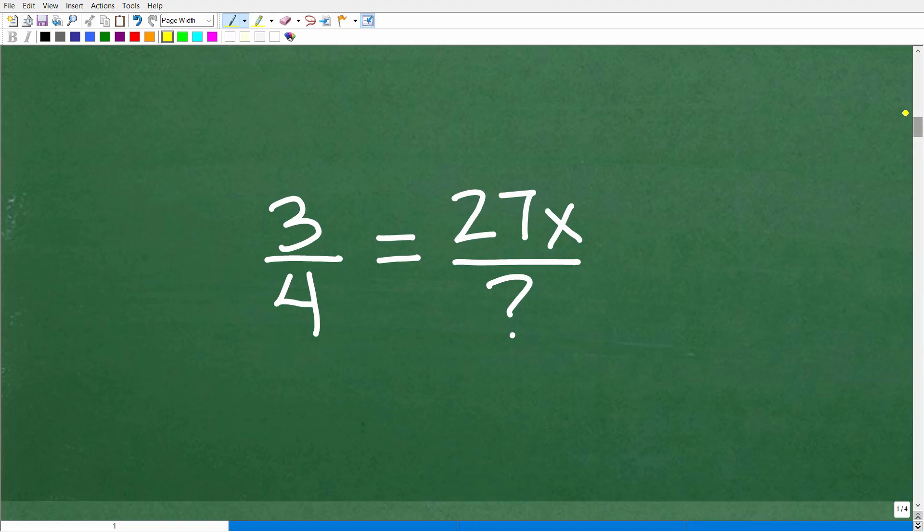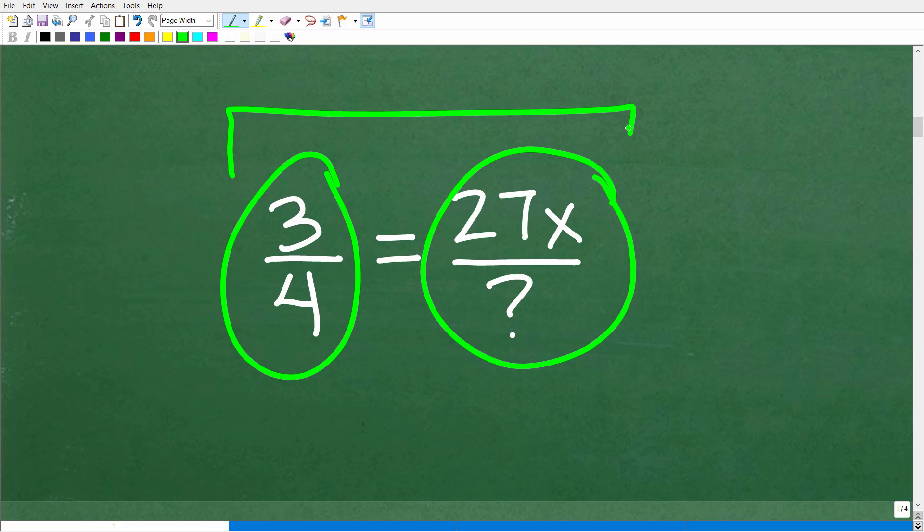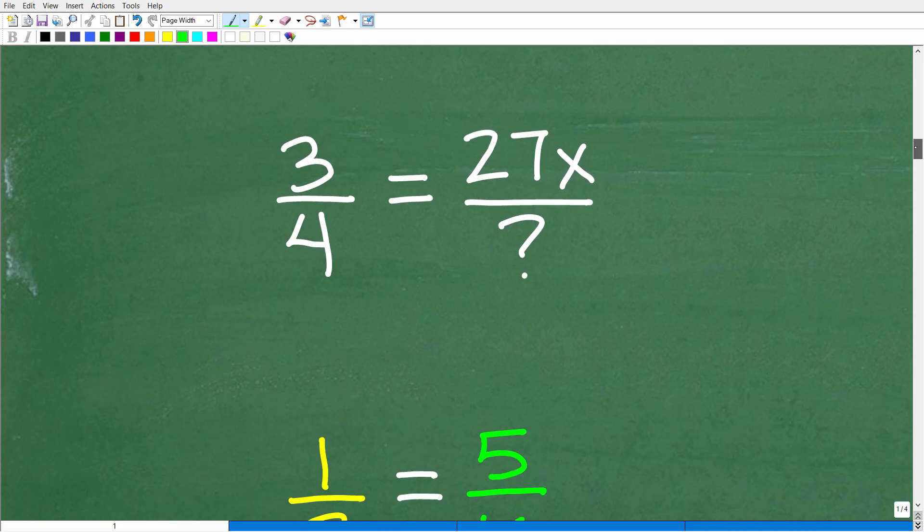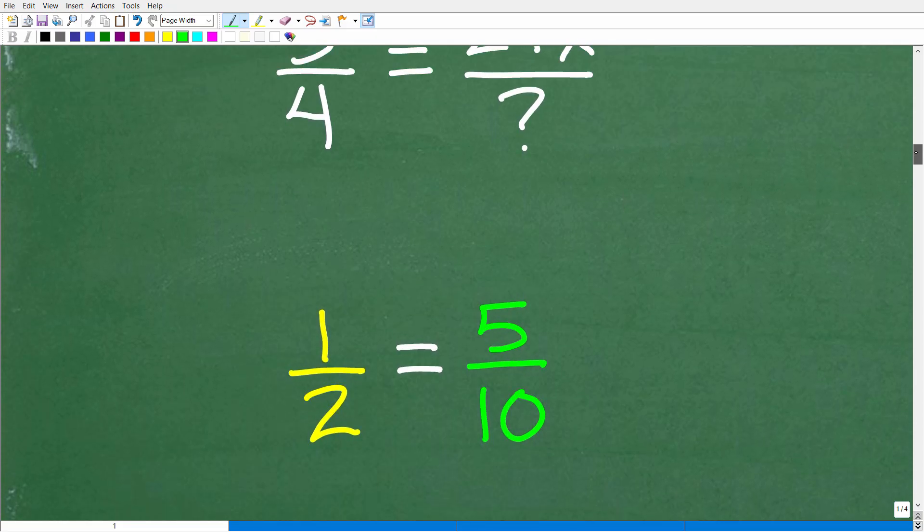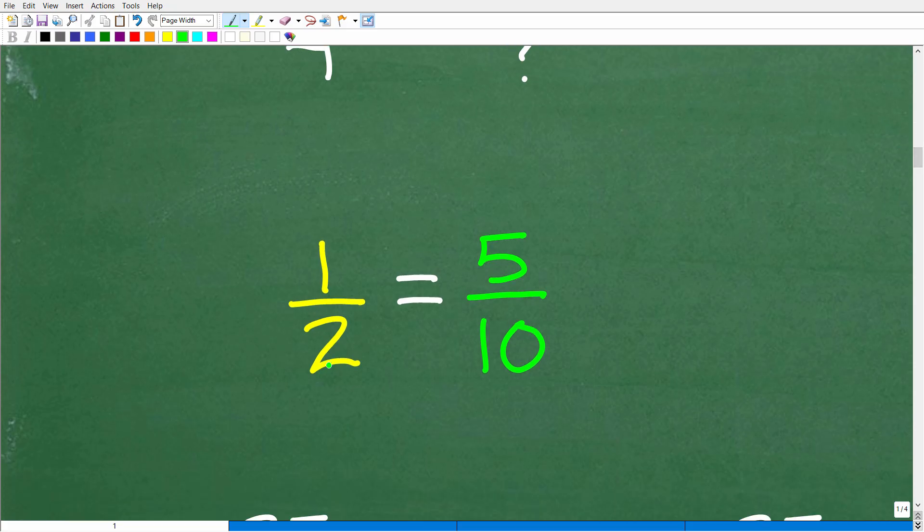Let's do a more thorough review. In mathematics, when you see a fraction equal to another fraction, by definition this is what we call a proportion. We need to review some characteristics about a proportion because in algebra especially, there are a ton of problems that deal with proportions. A proportion, by definition, is two equal fractions.